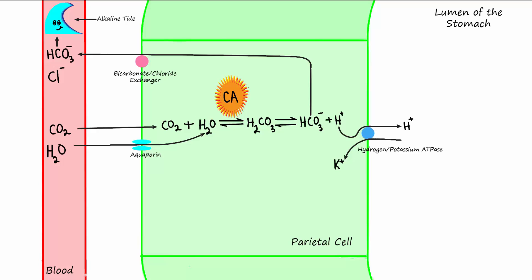Chloride that has come into the cell by way of a bicarbonate chloride exchanger then crosses the apical membrane of the parietal cell and into the stomach lumen by way of facilitated diffusion. We now have both ions of hydrochloric acid, chloride ions and hydrogen ions, in the stomach lumen.